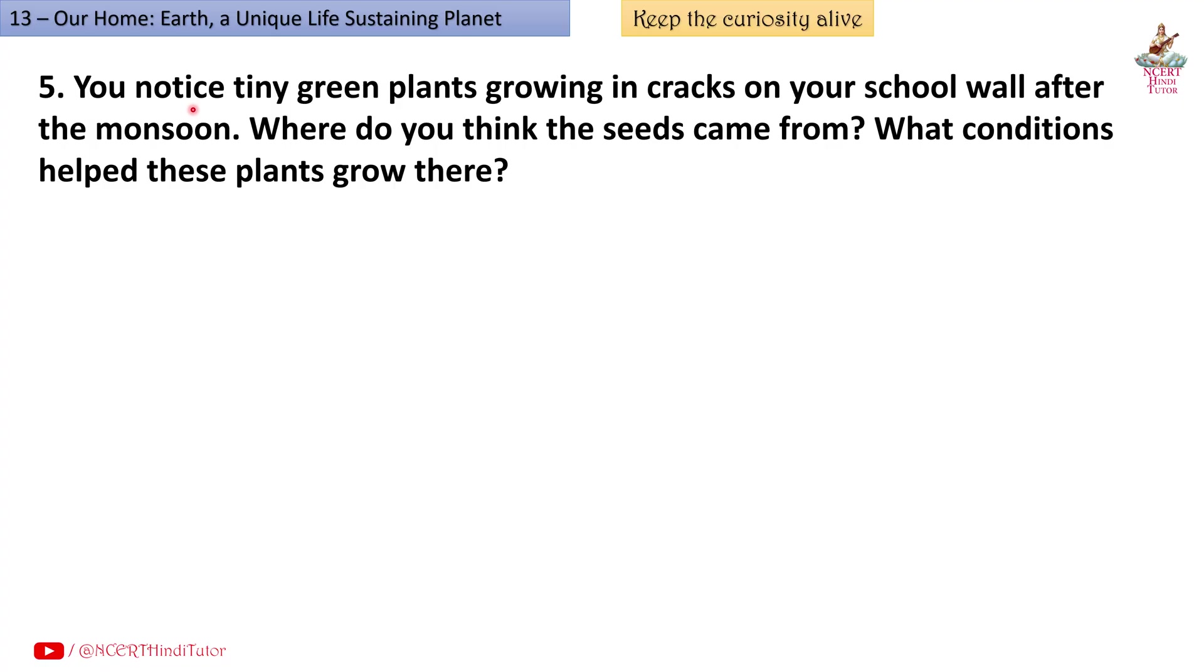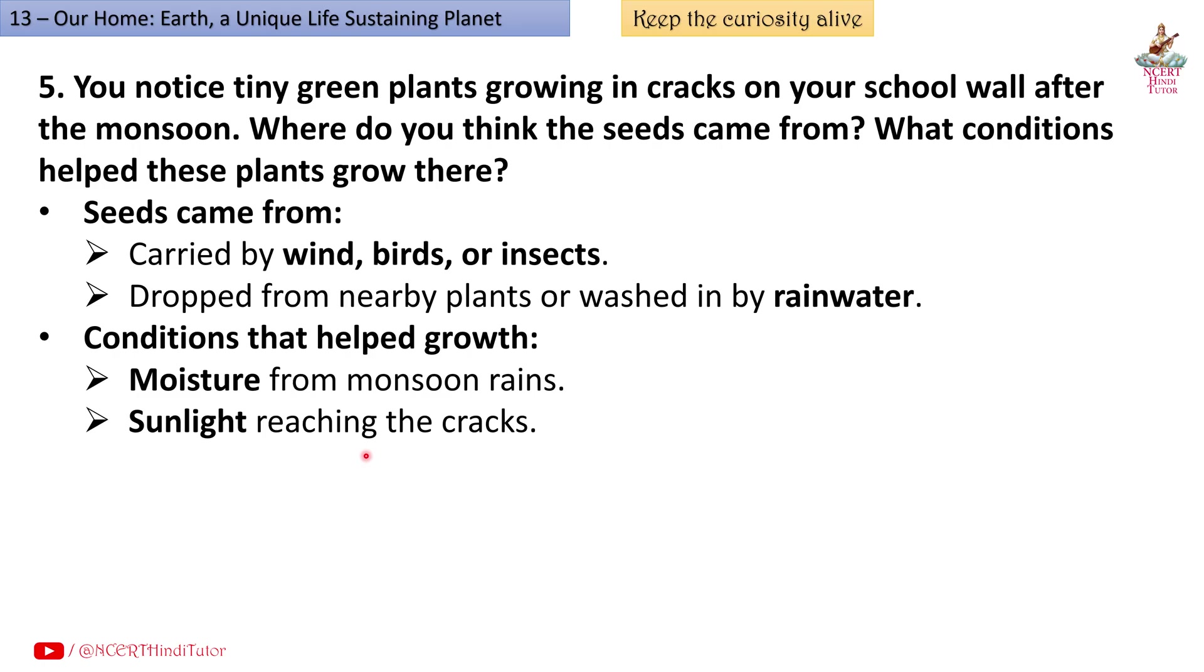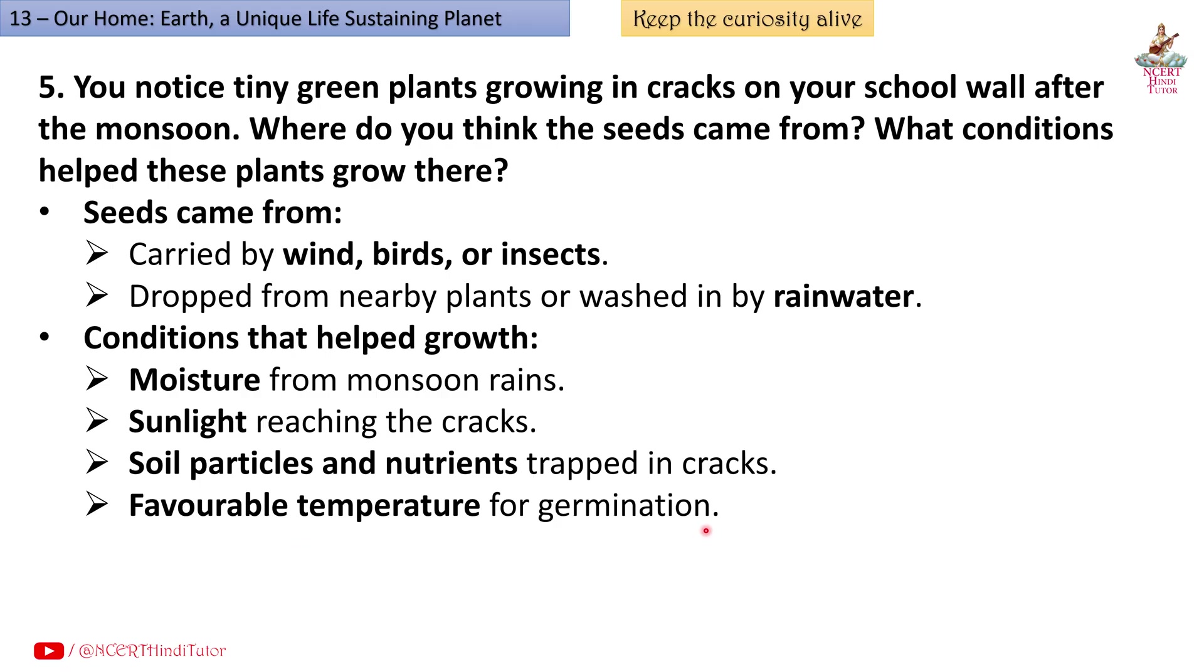Question 5: You notice tiny green plants growing in cracks on your school wall after the monsoon. Where do you think the seeds came from? What conditions helped these plants grow there? Answer: Seeds came from being carried by wind, birds or insects, dropped from nearby plants or washed in by rainwater. Conditions that helped growth: moisture from monsoon rains, sunlight reaching the cracks, soil particles and nutrients trapped in cracks, and favorable temperature for germination.